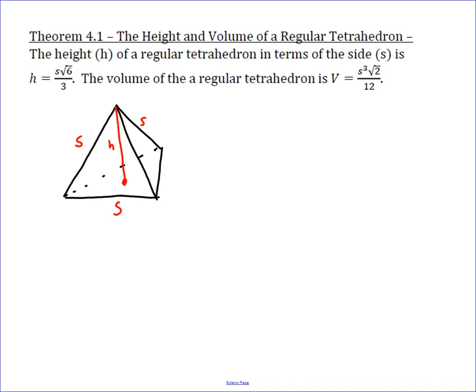In this video, we take a look at two important formulas in a regular tetrahedron. Regular tetrahedron, tetra meaning four, is a polyhedron with four congruent equilateral triangles as faces.